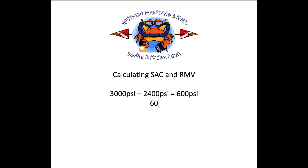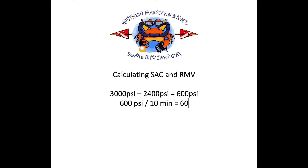Now we take the 600 psi and divide that by 10 because we swam for 10 minutes, and we end up with 60 psi per minute — that's what we were using at 33 feet. It would be simple to just say we use 60 psi per minute, but that's at 33 feet, so to bring it back up to the surface and get a surface air consumption rate we have to do a little bit of math.